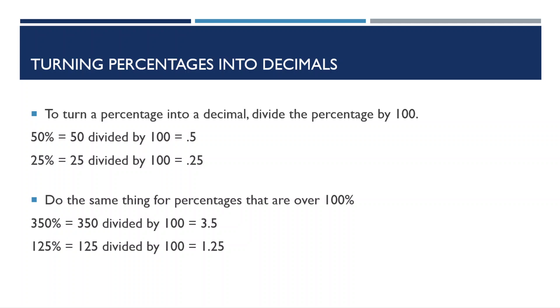Next, we're going to see how we can turn percentages into decimals. One easy way to do this is to divide the percentage by 100. So 50% would be 50 divided by 100, which equals 0.5. And 25% is 25 divided by 100, which equals 0.25.